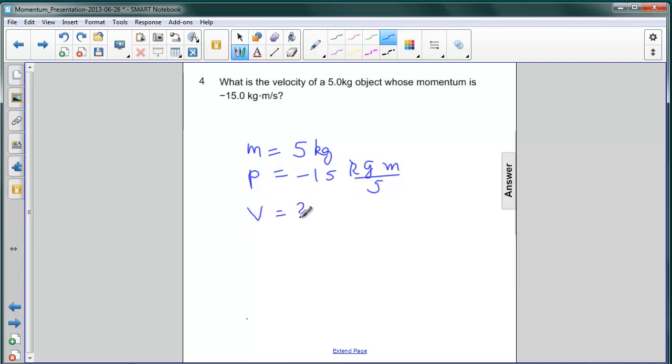Now recall that momentum is mass times velocity. So if we just get v is equal to p over m.